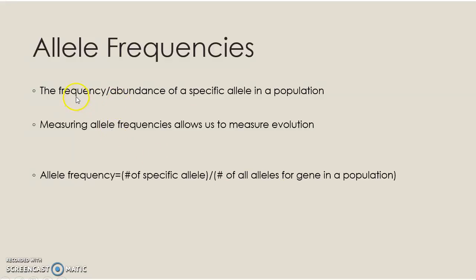What we're doing is figuring out the abundance of a specific allele in a population. That's important because we want to be able to tell whether evolution is happening or not. Evolution is a change in allele frequency over time or over generations. By measuring the allele frequency, we can tell whether evolution happened — that's why this is such a useful tool.